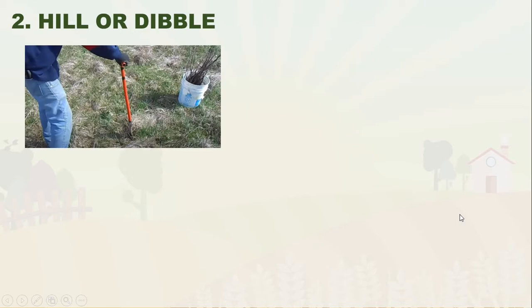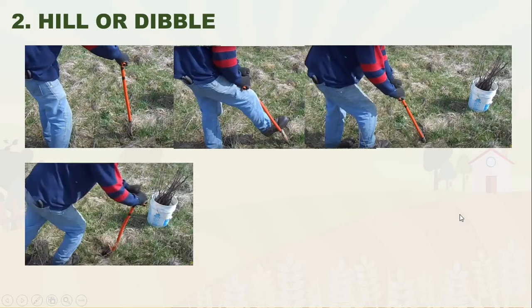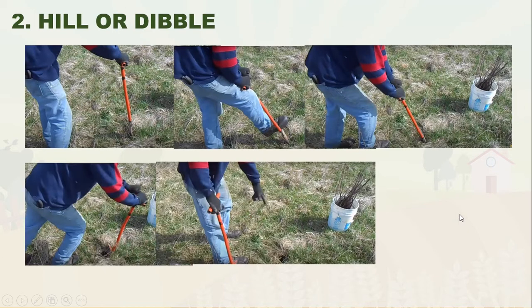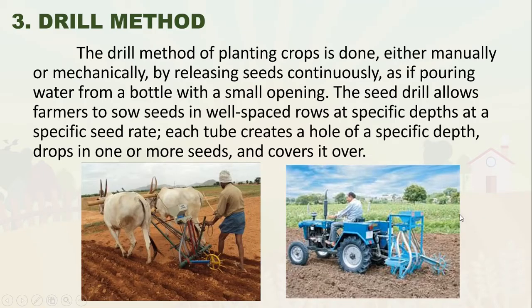To use the hill or dibbling method: first, insert the dibble into the soil, push it downward to create a hole, then insert your seeds. The last method is the drill method. Planting by the drill method is done either manually or mechanically by releasing seeds continuously, like pouring water from a bottle with a small opening. The seed drill allows farmers to sow seeds in well-spaced rows at specific depths.